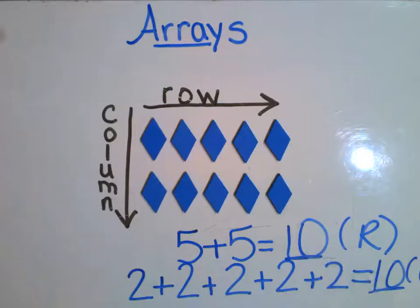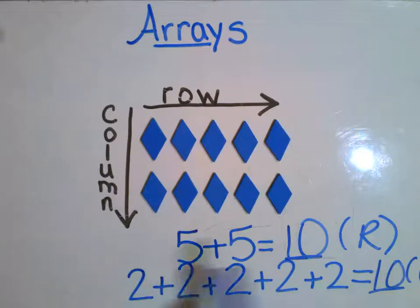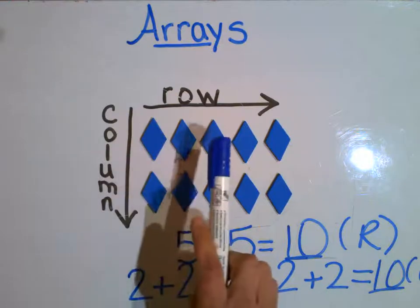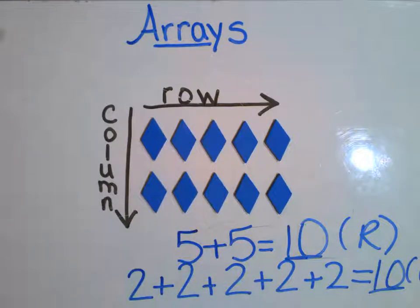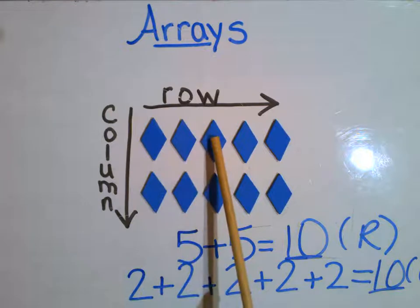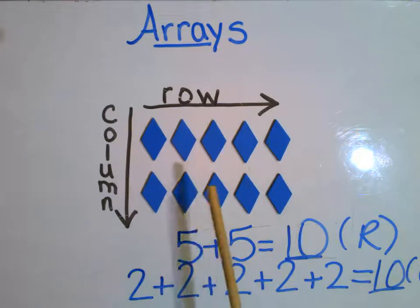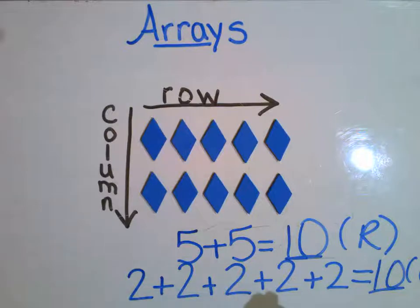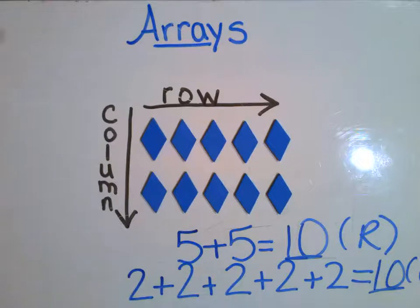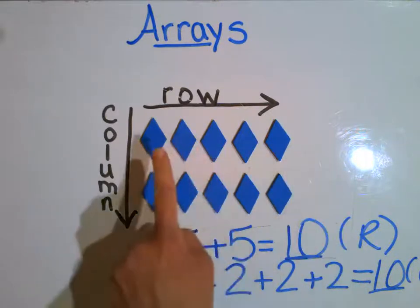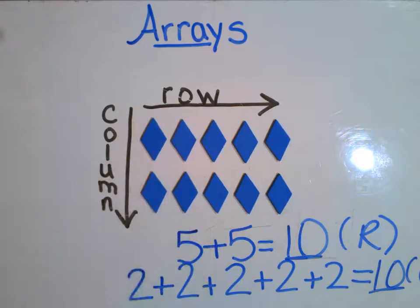Why am I still getting 10 as a sum for both? Because technically I have 10 in that arrangement, finding it two different ways — by the row and the column. For any non-believers, let's count each one by one: one, two, three, four, five, six, seven, eight, nine, 10. There you go. So we used that repeated addition to find out how many total were in that specific array, following a row form of repeated addition and a column form of repeated addition.